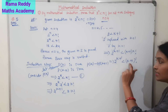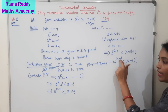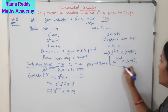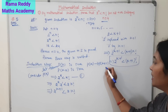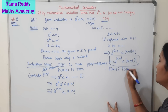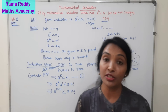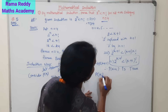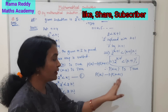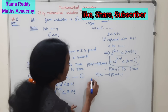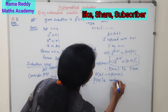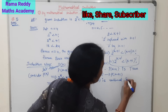This is exactly the form 2 power n is less than n factorial. Since P of k was true, we have shown 2 power k plus 1 is less than k plus 1 factorial. Therefore, P of k plus 1 is true, and we have P of k implies P of k plus 1. Induction step is verified.